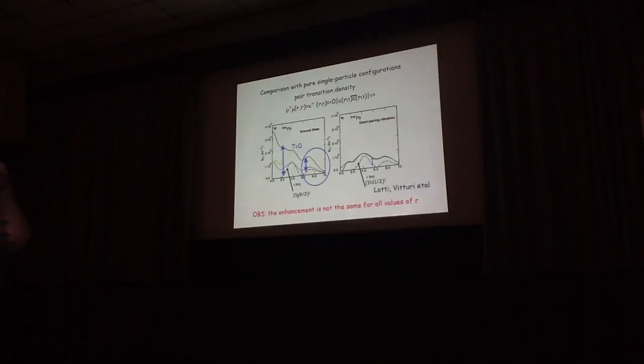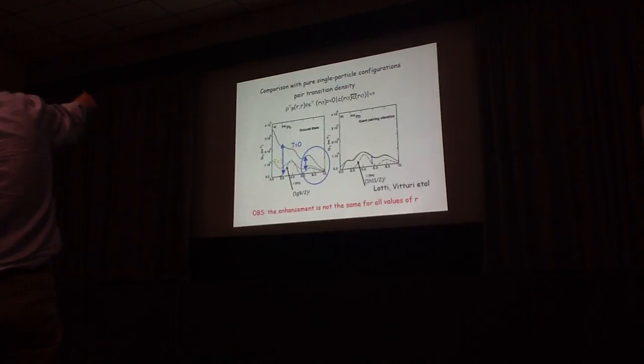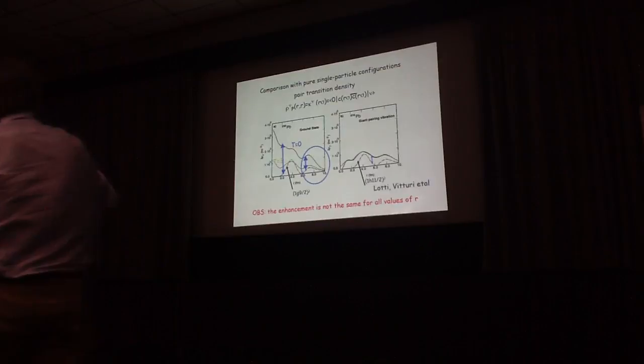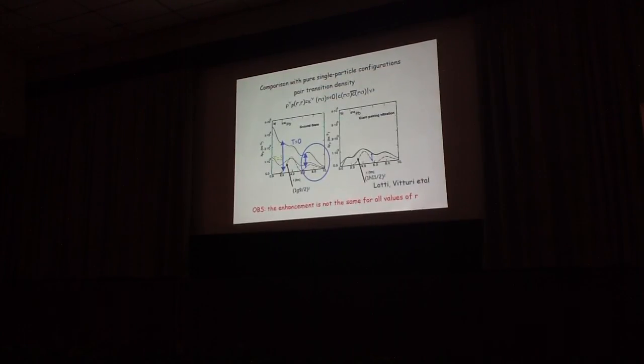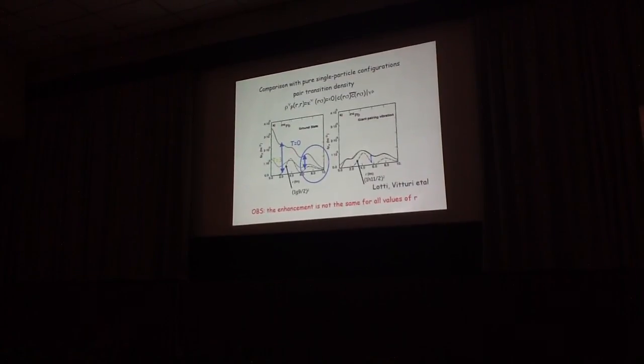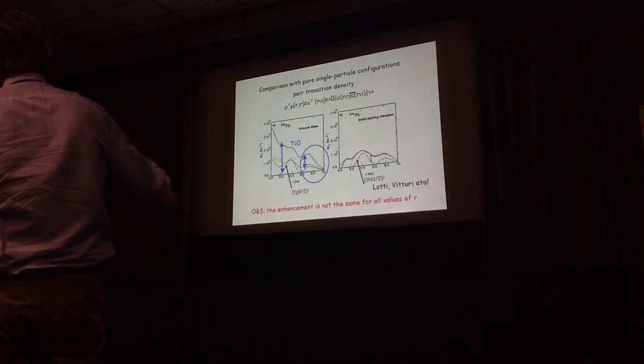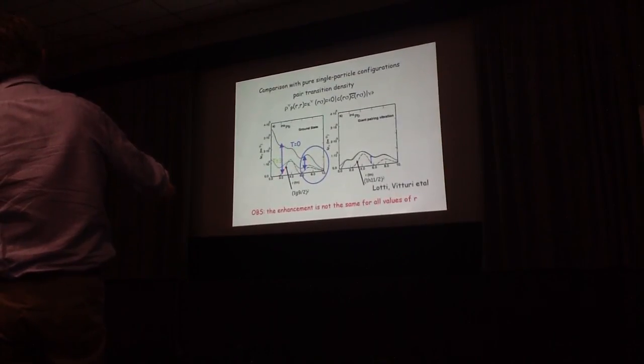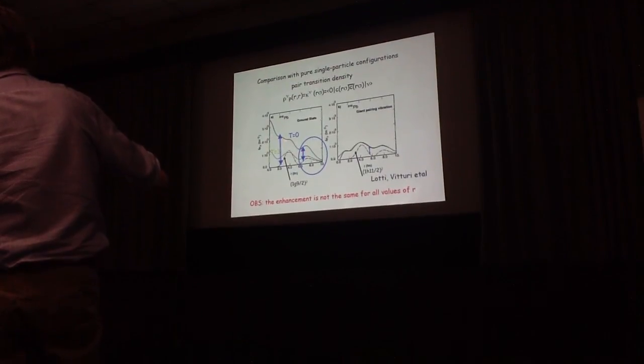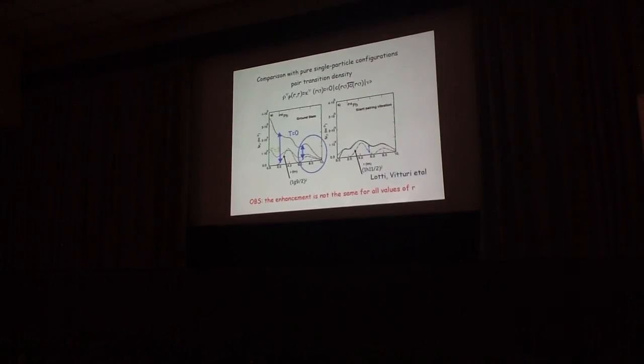For example, the transition density, particle-particle transition density, from lead-208 to lead-210 as a function of R. And you compare the figure with... So you can see the two-particle transition density for a pure G9/2 up-square transition, compared with what you get from a correlated ground state. So you can see the enhancement of the two-particle transition density, but this enhancement is not the same in any point. So it's not obvious how to extract a unique enhancement factor.